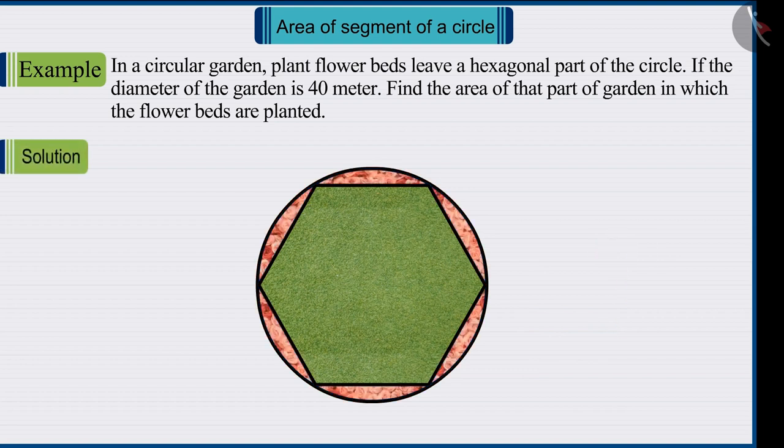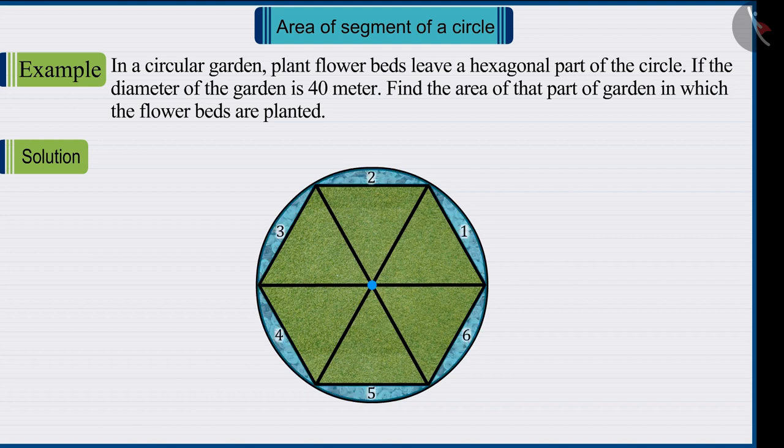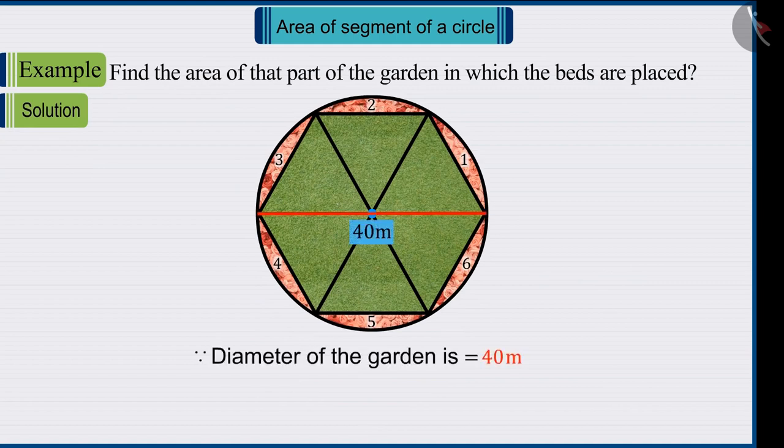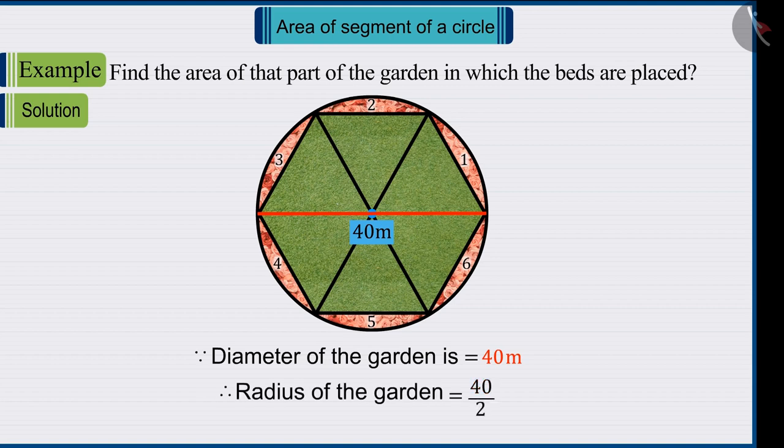Come, let's try to solve this. As you can see from the figure, there are six flower beds in the garden. According to this figure, there are six segments in the circle. Since it is given that the diameter of the garden is 40 meters, therefore the radius of the garden will be 20 meters.